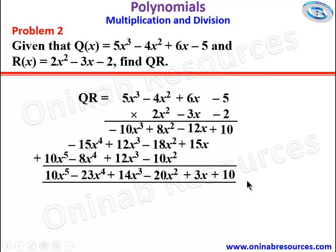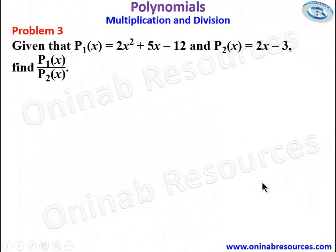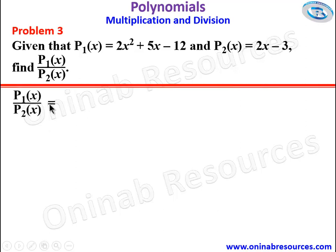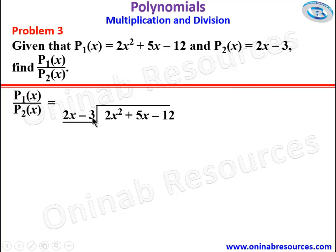We are done with problem 2. Then we go to problem 3. Given that p1 of x is equal to 2x squared plus 5x minus 12 and p2 of x is equal to 2x minus 3, find p1 of x over p2 of x. That is p1 of x divided by p2 of x. To do that we are going for long division. We have our table here, and p1 of x will go inside as the dividend, while the divisor p2 of x will be outside the box.